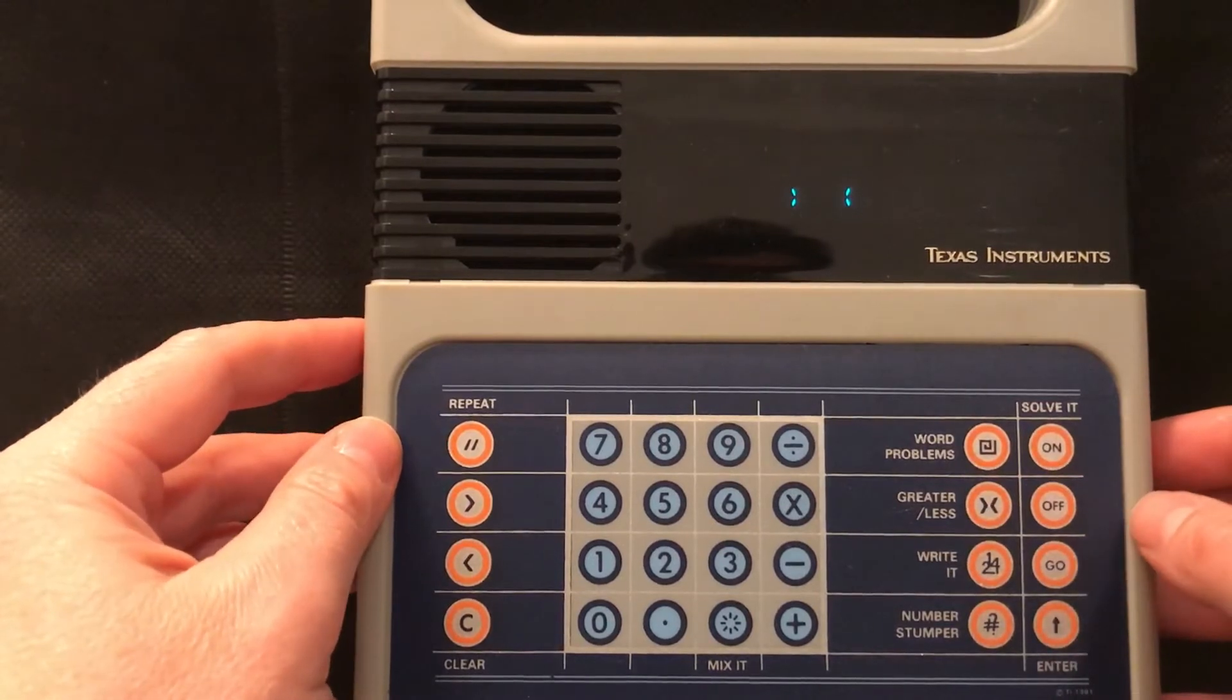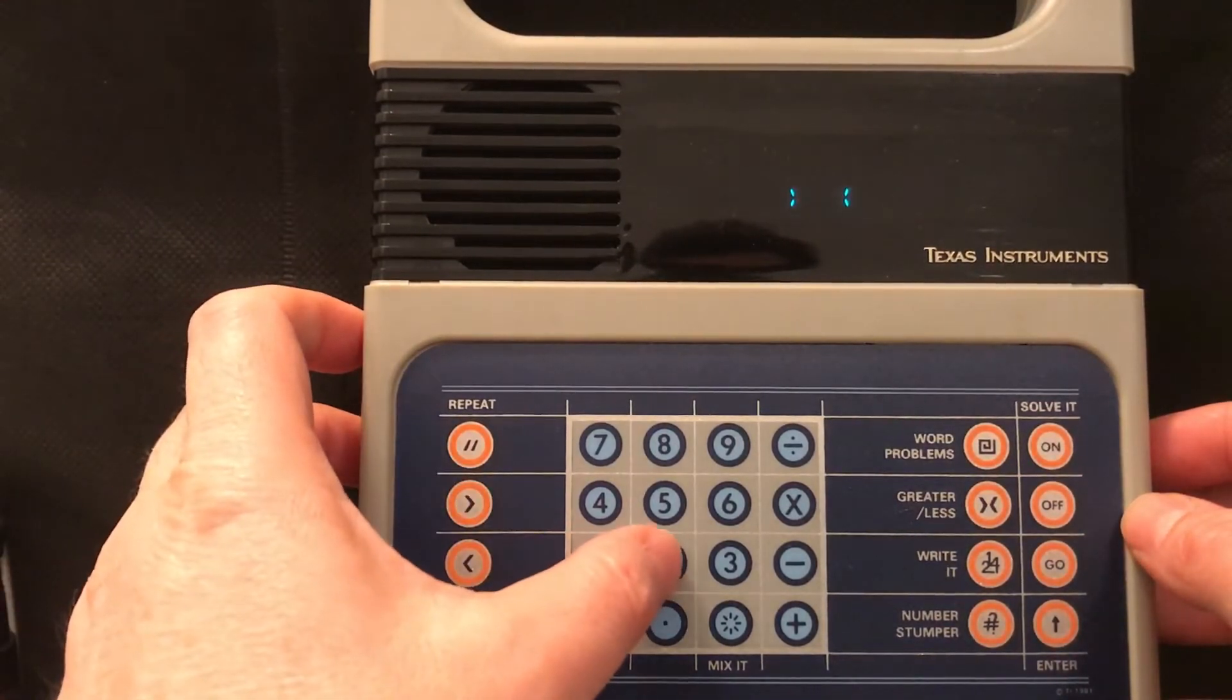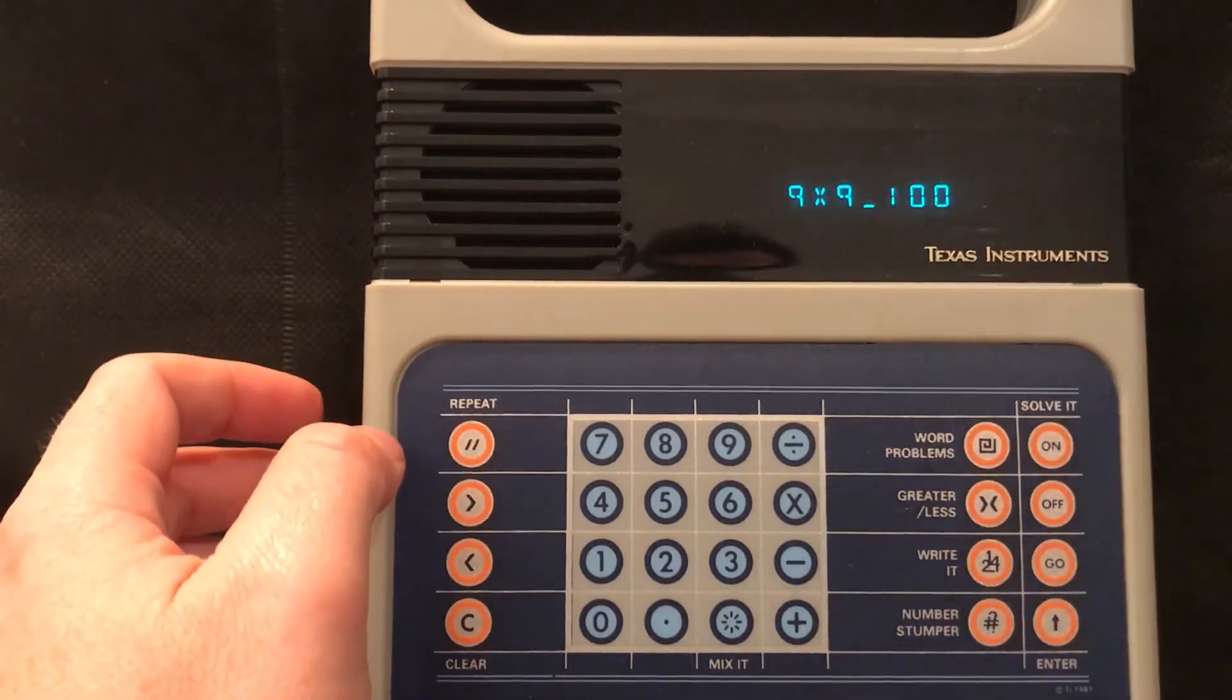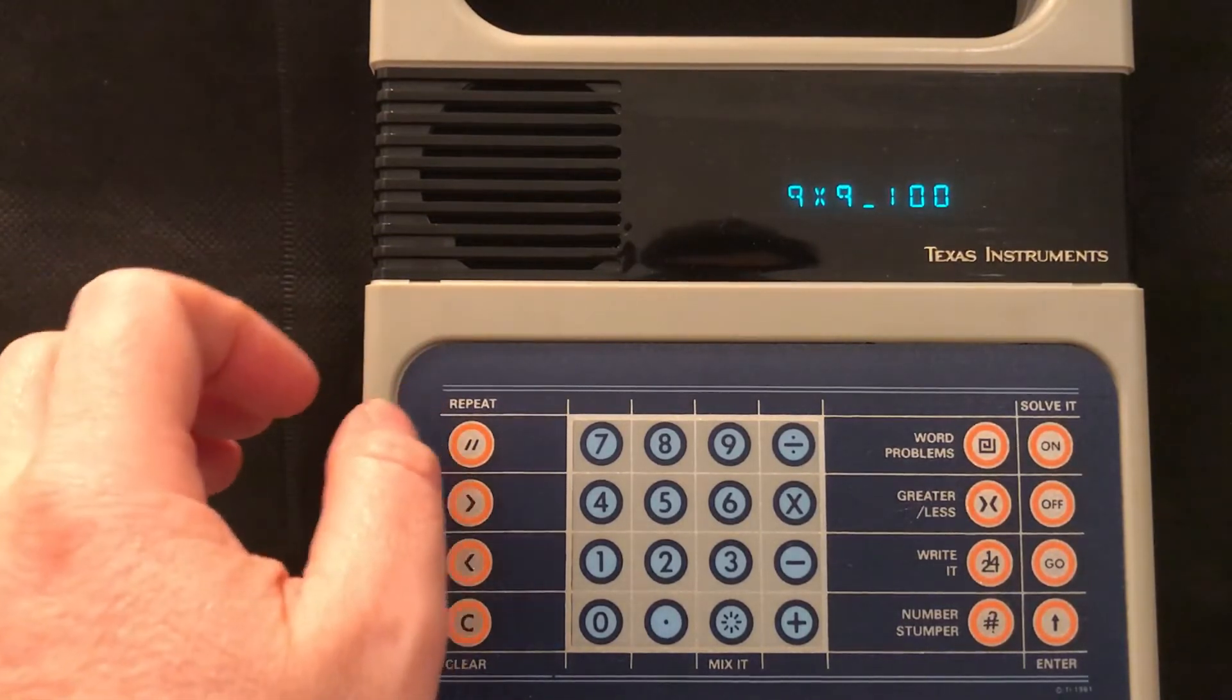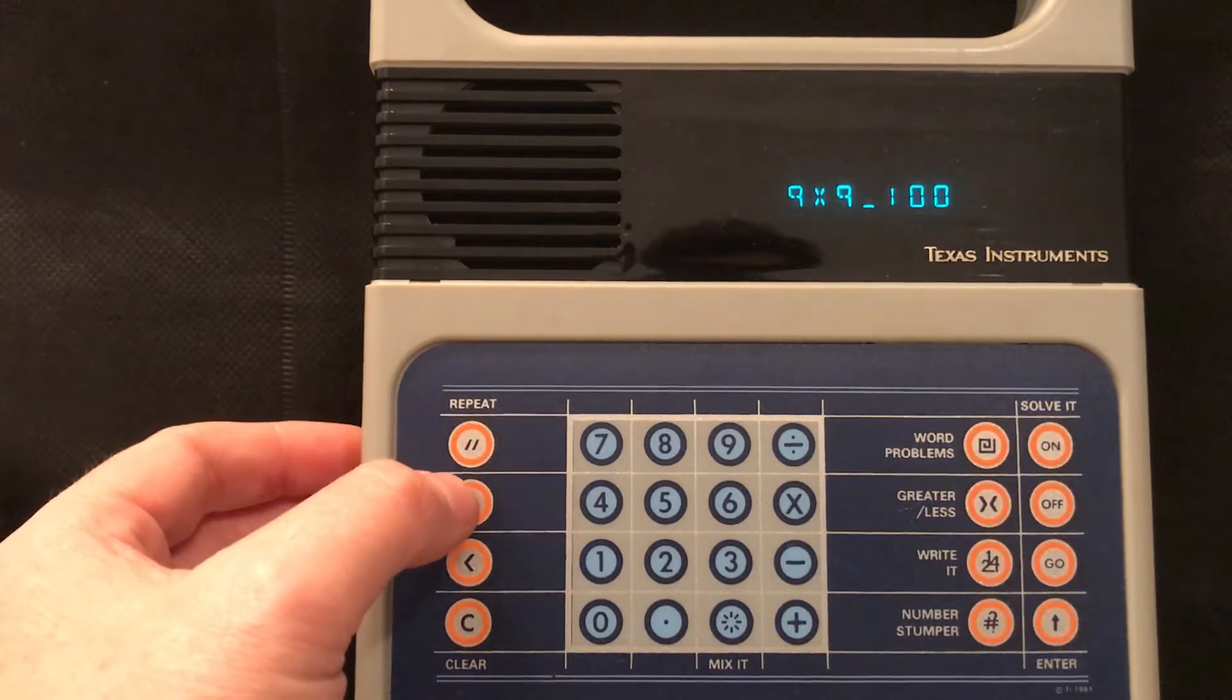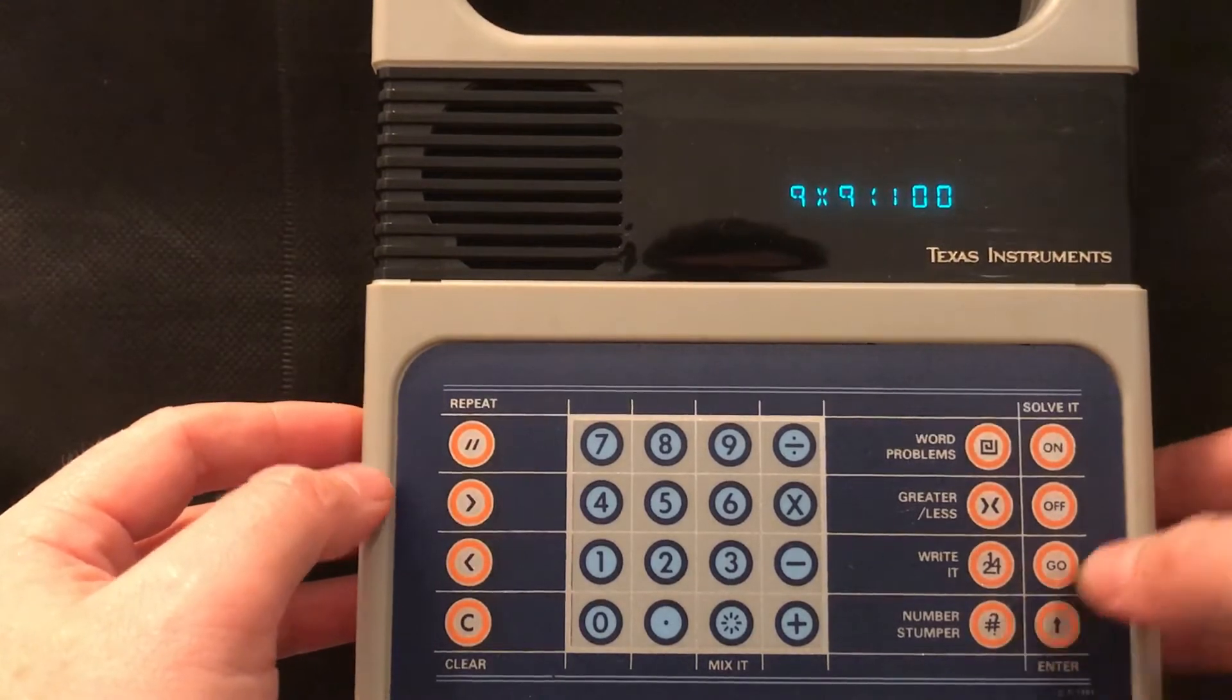Let's go for the greater or less than. Level two. Nine times nine is greater than or less than one hundred. So it does these two part questions. You've got to work out one part of it and then work out whether it's greater than or less than the other number. So nine times nine is eighty nine and that is less than a hundred. So you press this little less than button there and the less than appears and you press enter.